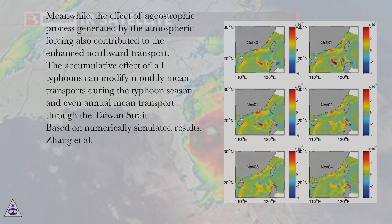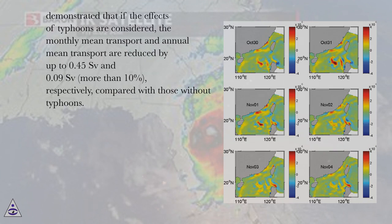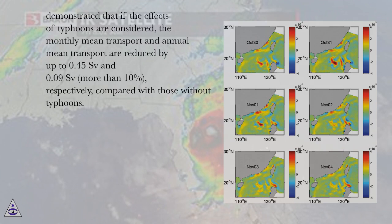Based on numerically simulated results, Zhang et al. demonstrated that if the effects of typhoons are considered, the monthly mean transport and annual mean transport are reduced by up to 0.45 Sverdrups and 0.09 Sverdrups, more than 10 percent, respectively, compared with those without typhoons.